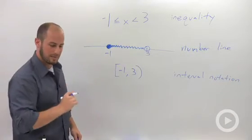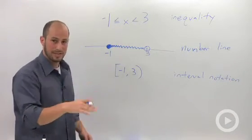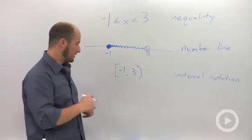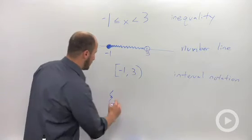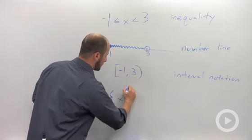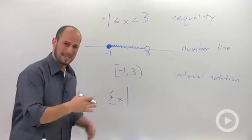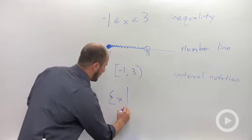And the last way we're going to talk about is what they called builder notation. Sometimes you get these funky bracket, x, and it's basically a bar. This bar means such that.